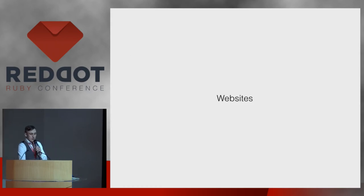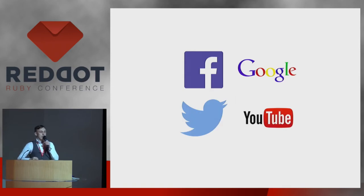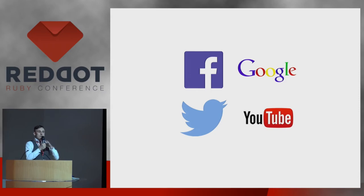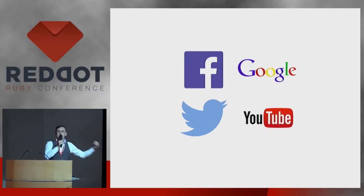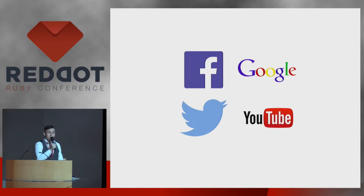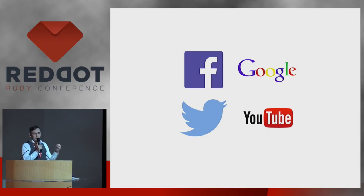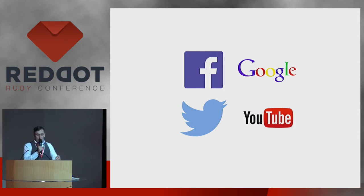Another thing is websites. If you think about the biggest websites on the internet — Google, Facebook, YouTube — some products allow users only to register via social networks like Facebook and Twitter. But guess what? All these websites are banned in China, so 1.3 billion people cannot log into your website because you are so centered on these products.